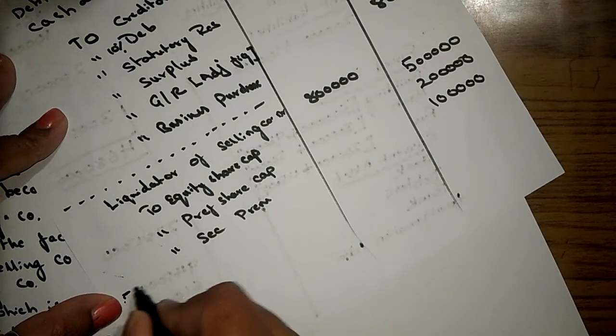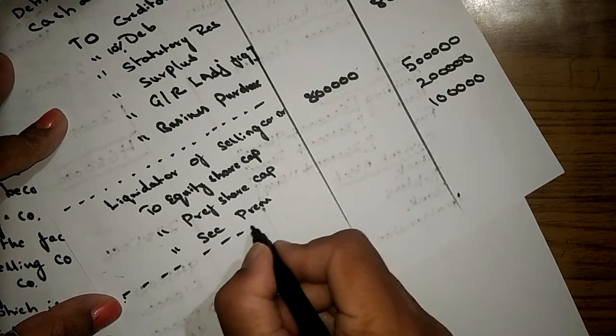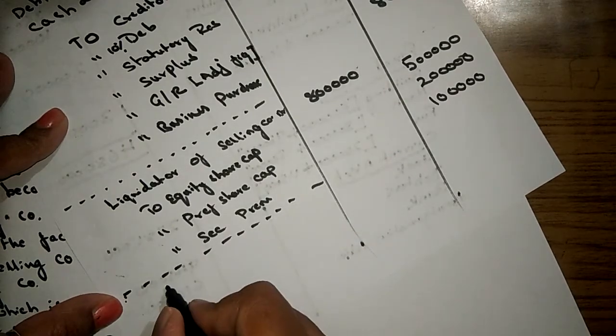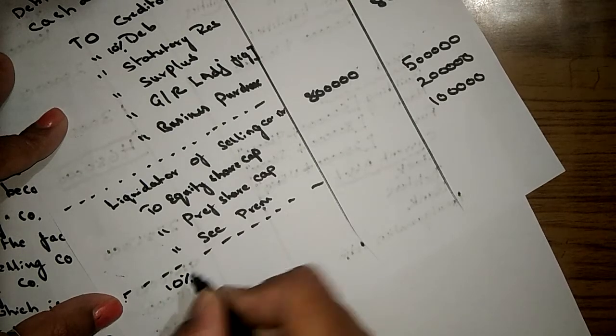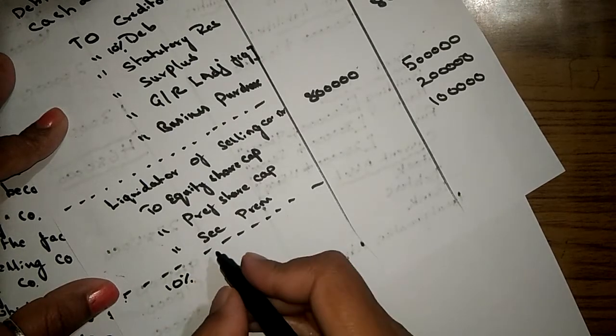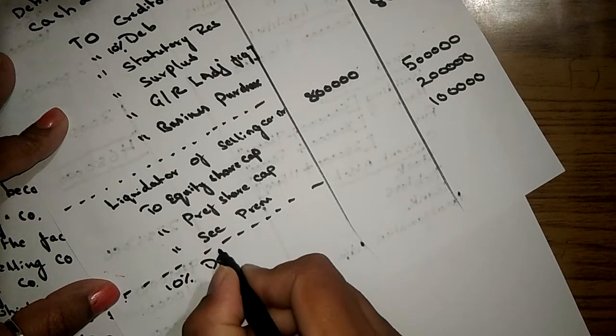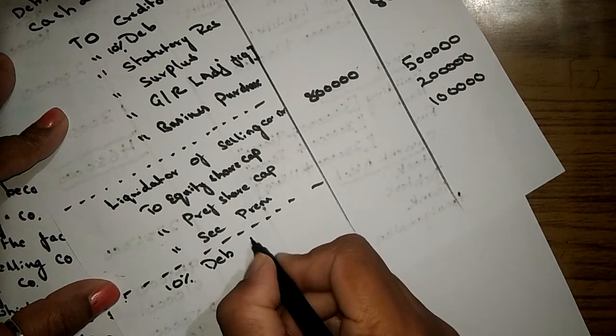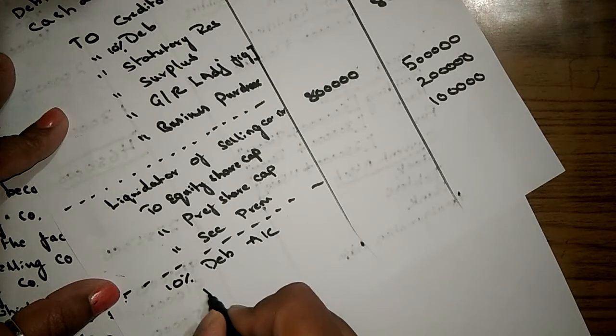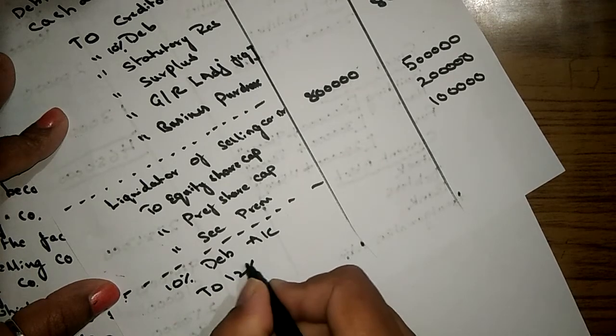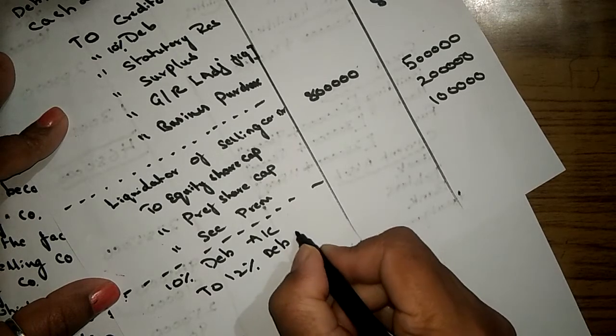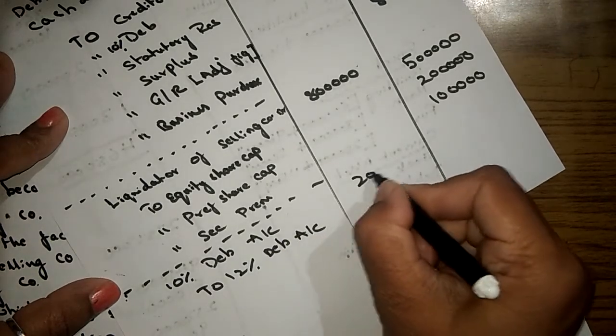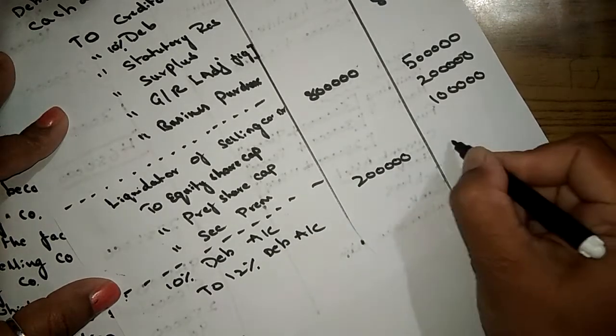There was one entry for the conversion of debentures. 10 percent debentures of selling company is going to convert to 12 percent debentures in the new company. The amount remains same, so it's 2 lakhs to 2 lakhs.